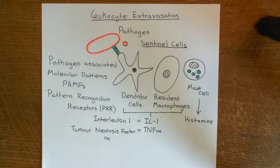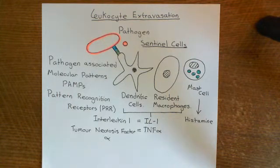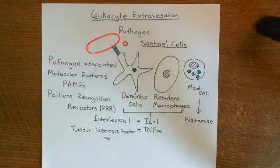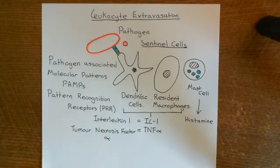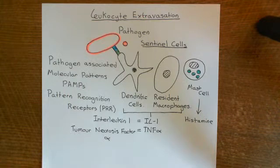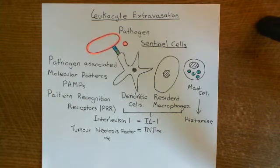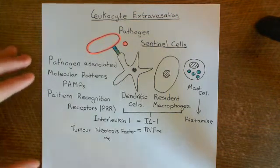Welcome to this next video in which we are discussing leukocyte extravasation. We have so far discussed the beginning of the acute inflammatory response. When a pathogen is within a tissue, it has certain molecules on its surface, or is secreting certain molecules, that are a giveaway sign that this is not a normal cell. Those molecules are known as pathogen-associated molecular patterns, or PAMPs, and these activate pattern recognition receptors, or PRRs, on the surface of sentinel cells such as dendritic cells, resident macrophages, and mast cells, which are dotted around all of your tissues, and these release pro-inflammatory mediators.